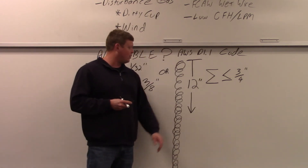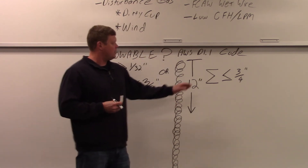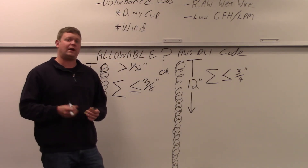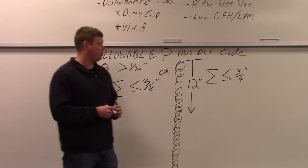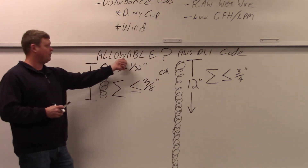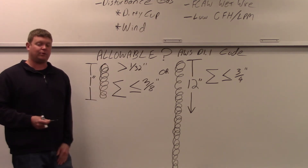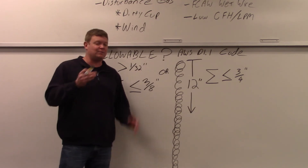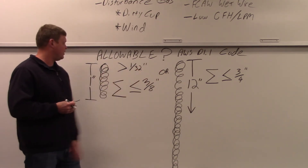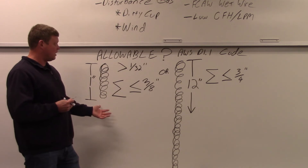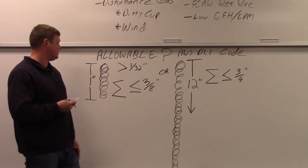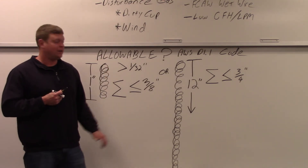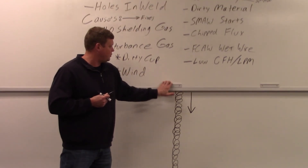Over 12 inches of weld, the sum of all porosity must be less than or equal to 3/4 of an inch. If it's more than 3/4 of an inch, it's not allowable. Personally, when I see any porosity I think something's wrong — 3/8ths in an inch is almost half the weld, which seems like a lot, but that's what the code allows.